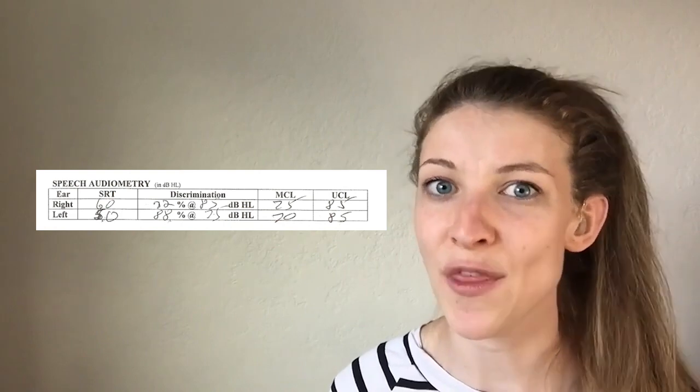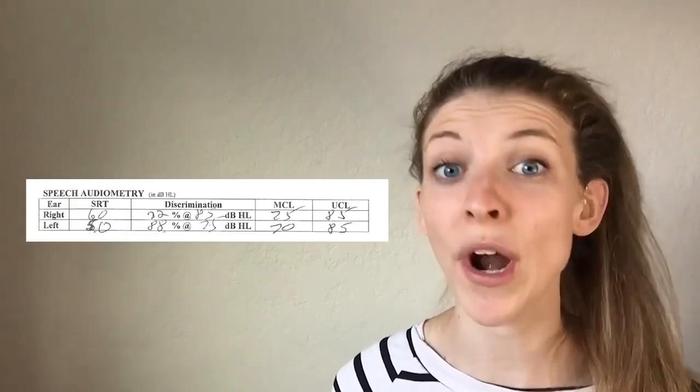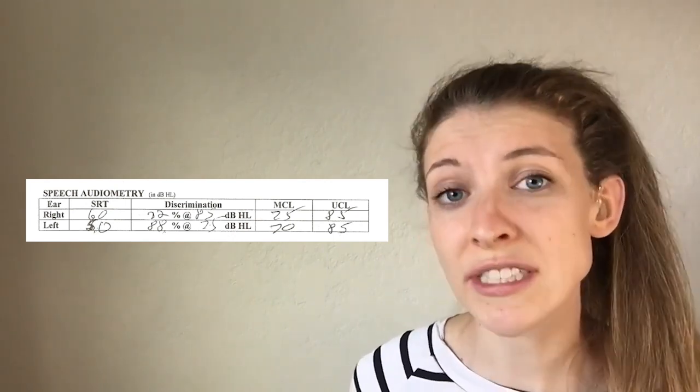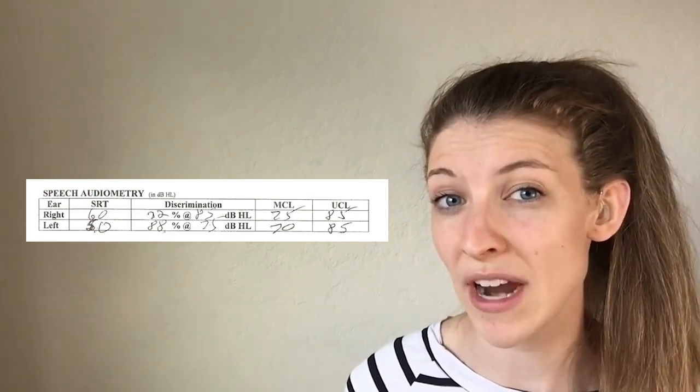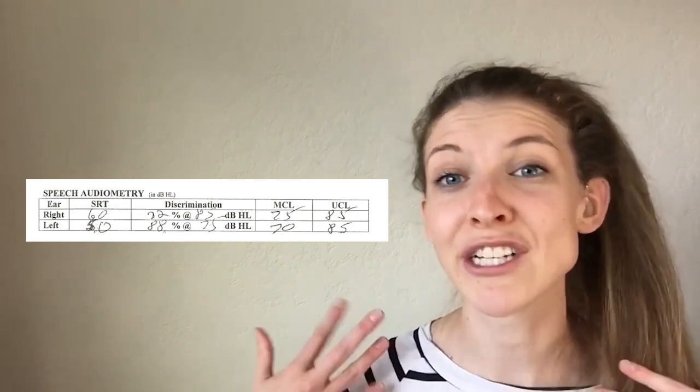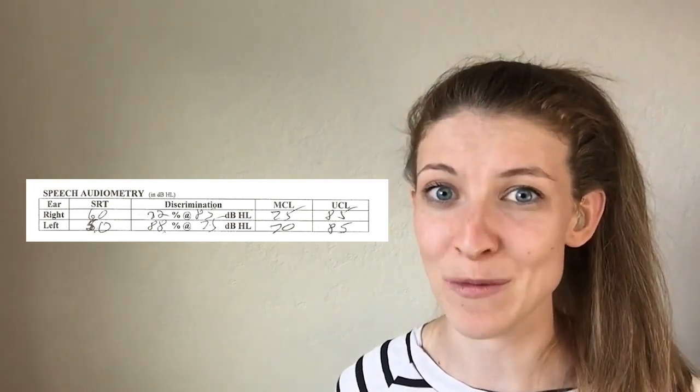Whether you're here to learn to read an audiogram for yourself or a loved one, pay attention to your better ear. Look at your audiogram, figure out which ear is better, and use that to your advantage — sit or position yourself so your best ear is facing the person you want to hear. Also, the audiogram can include a section for speech audiometry, which calculates how well you can discriminate or understand what you're hearing. Hearing and understanding are two very different things. According to my audiogram, I have 72% discrimination in my right ear and 88% in my left ear — another reason why I face people with my left side.